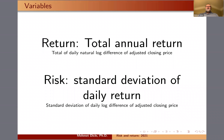The variables are risk and return. The return is the total annual return in 2021 — basically a total of daily natural log differences of adjusted closing prices. The risk is the standard deviation of these daily log differences of adjusted closing prices.